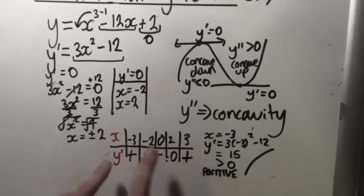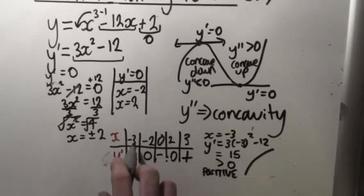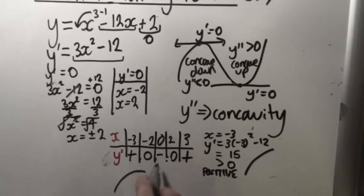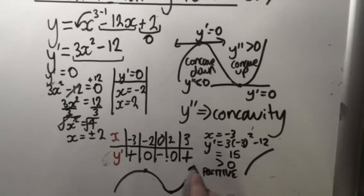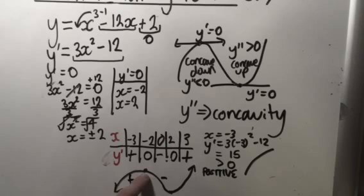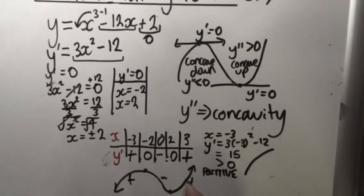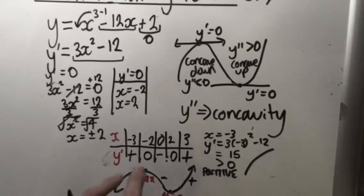So by graphing what this would look like: all points to the left of minus 2 are positive, so the graph is rising there. Then it's flat at minus 2, then decreasing between minus 2 and 2, then flat again at 2, then increasing after that. So if the left side is positive and the right side is negative, this point is a maximum. And if the left side is negative and the right side is positive, then that point is a minimum. So we get a maximum at x equals minus 2 and a minimum at x equals 2.